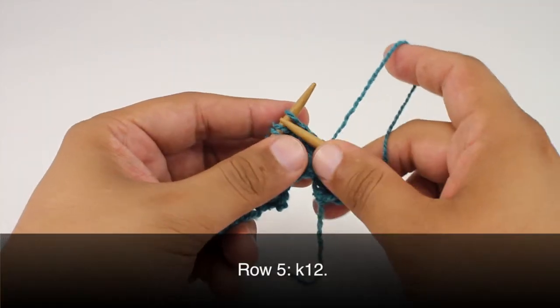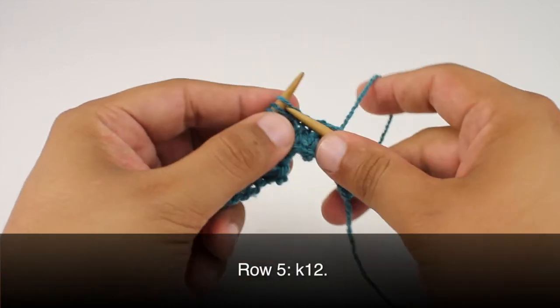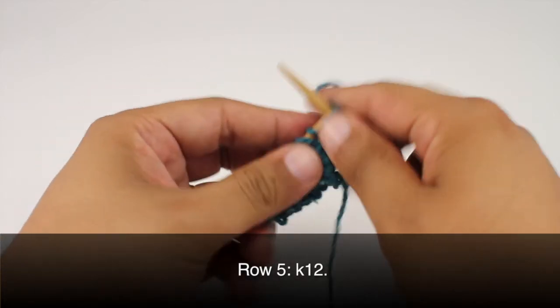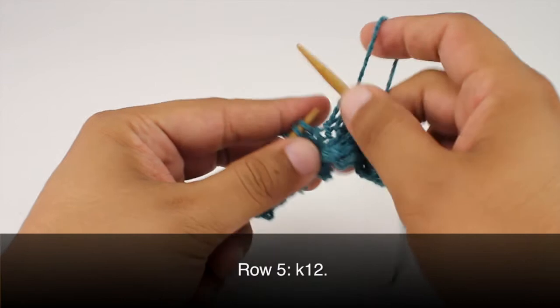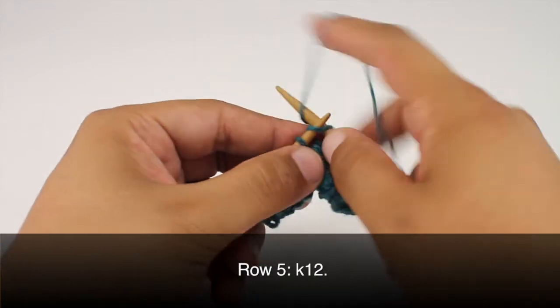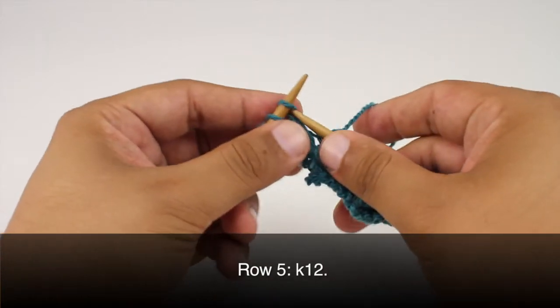Row five, we're going to repeat Row 1 by knitting 12. There's six, nine, and twelve.